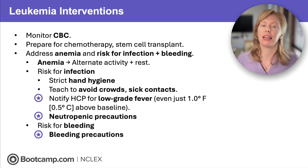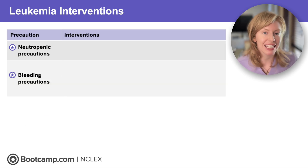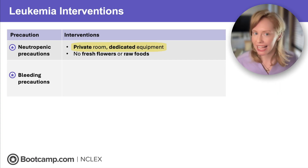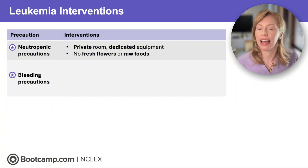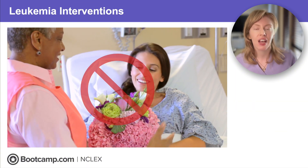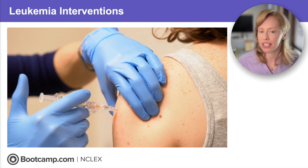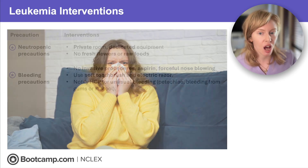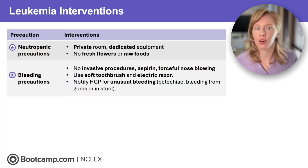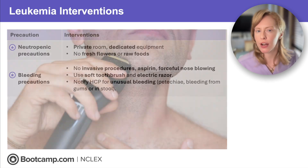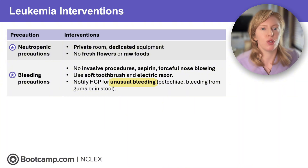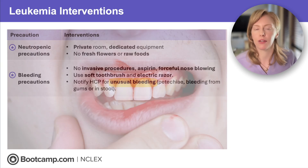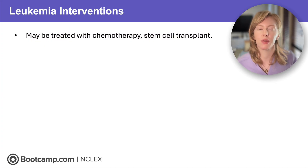Implement neutropenic precautions: put them in a private room with dedicated equipment so they don't swap bugs with a roommate, and no fresh flowers or raw foods because these can harbor bacteria. For bleeding precautions: avoid invasive procedures like intramuscular injections, don't give aspirin because it's an anti-platelet, and teach them to avoid forceful nose blowing because that can cause epistaxis. To limit nicks in their gums or skin, teach them to use a soft toothbrush and an electric razor. Notify the healthcare provider for any unusual bleeding — petechiae, bleeding from the gums, or blood in their stool.